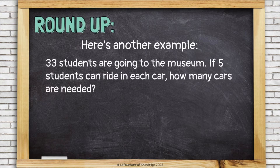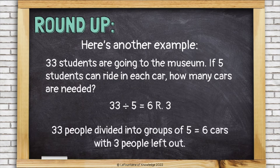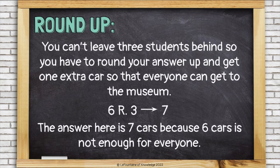Here's another example. 33 students are going to the museum. If 5 students can ride in each car, how many cars are needed? So here we're dividing 33 divided by 5, which is 6 remainder 3. But of course, there's no such thing as remainder 3 cars. 33 people divided into groups of 5 gives 6 cars, but then we have 3 people left out. You can't leave 3 students behind, so you have to round your answer up and get one extra car so that everybody can get to the museum. There's going to be some empty seats in that car, but that's okay. We'll round 6 remainder 3 up to 7. The answer is 7 cars, because 6 cars is not enough for everyone.